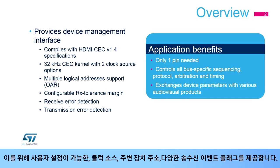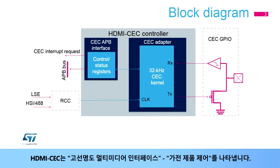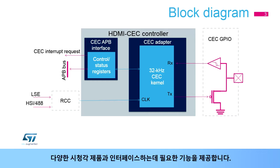Configurable clock sources, peripheral address, and a number of received and transmission event flags are available. Applications benefit from a low-pin count standard interface to exchange device parameters. HDMI CEC stands for High-Definition Multimedia Interface Consumer Electronics Control. The controller complies with HDMI CEC version 1.4 specifications and provides functions needed to interface with various audio-visual products.